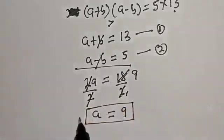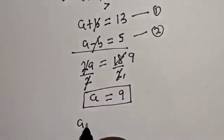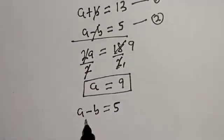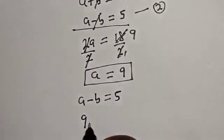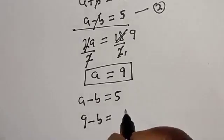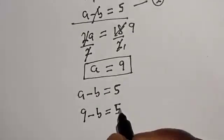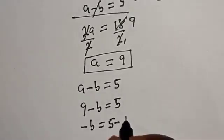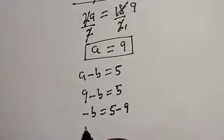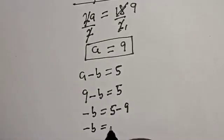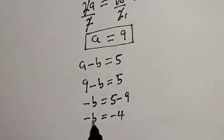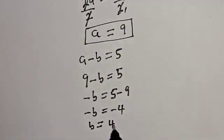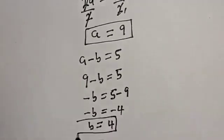Now we can solve for b. Using equation 2, a minus b is equal to 5. Substituting a equals 9: 9 minus b equals 5, so minus b equals 5 minus 9, which is −4. Therefore b is equal to 4.